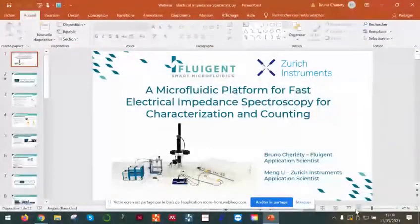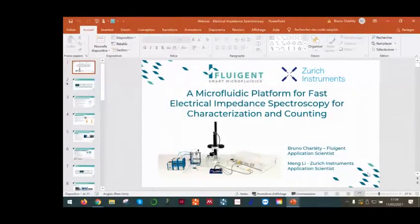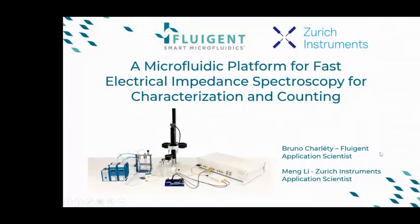Alright, so maybe I think we can start. Bruno, I'll give you the lead. So hi, this is Bruno from Fluidgent. It's not easy to characterize and count cells precisely as standard methods require additional, unusually time-consuming steps. We will show you a method to overcome these limitations. Today, we will present a fast impedance spectroscopy system for characterization and counting.